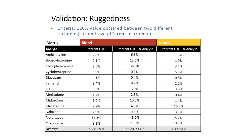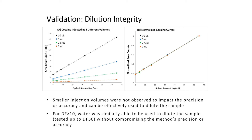Finally, I also looked at how dilution could be accomplished using both a smaller injection volume and using water, without impacting the precision or accuracy of the method. I built a standard addition curve using cocaine and injected it at four different volumes between 10 microliters and one microliter, then normalized those curves. There is excellent overlap at all four injection volumes, effectively achieving up to a 10-fold dilution.